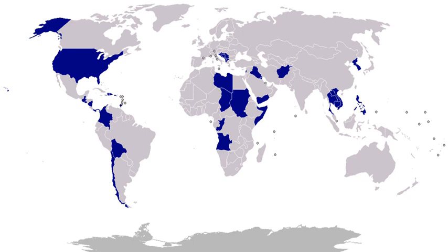This timeline of United States government military operations is based on the Committee on International Relations, now known as the U.S. House Committee on Foreign Affairs. Dates show the years in which U.S. government military units participated. Items in bold are the U.S. government wars most often considered to be major conflicts by historians and the general public. Note that instances where the U.S. government gave aid alone, with no military personnel involvement, are excluded, as are Central Intelligence Agency operations.